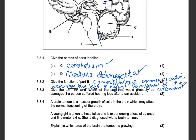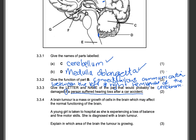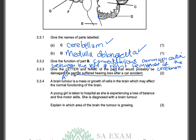Give the letter and name of the part that would probably be damaged if a person suffered hearing loss after a car accident. This is very easy. The part that will obviously be damaged is the cerebrum, and the letter for the cerebrum is letter A — that is the cerebrum.